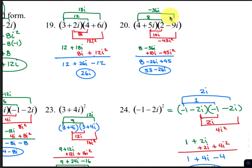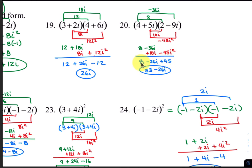For number 20, distribute again. 4 times 2 is 8. 4 times negative 9i is negative 36i. 5i times 2 is 10i. And 5i times negative 9i is negative 45i squared. The 8 comes down, negative 36i plus 10i combines to make negative 26i, and negative 45i squared becomes positive 45. 8 plus 45 is 53, so your final answer is 53 minus 26i.